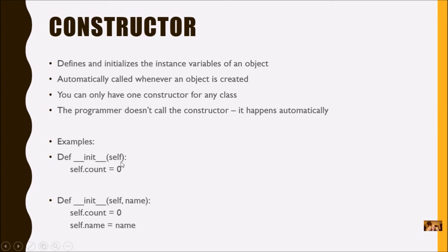You're always going to have the self parameter, then you list all the instance variables with self dot in front and whatever initial value you want. Here's an example where the value of name is going to be passed in from an argument to the parameter from a function.